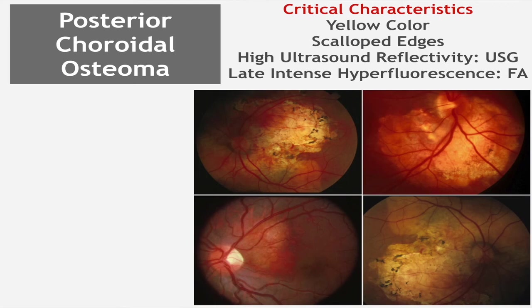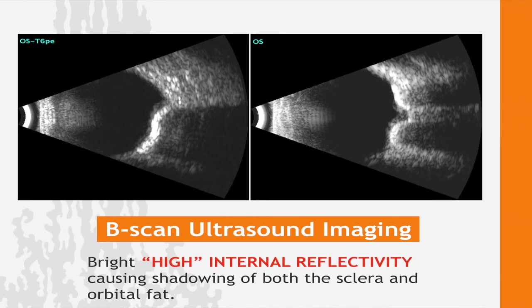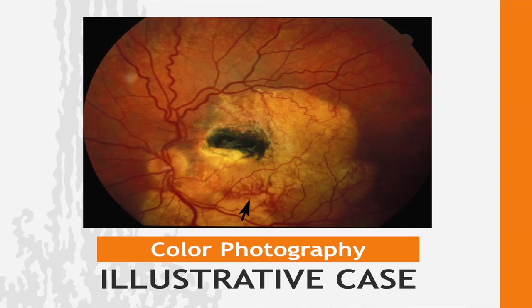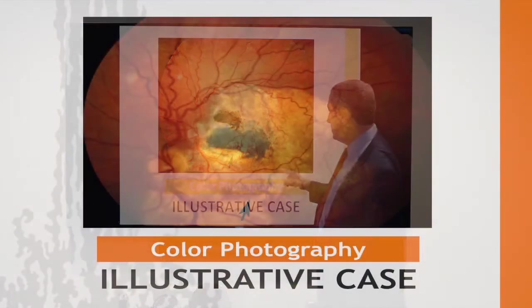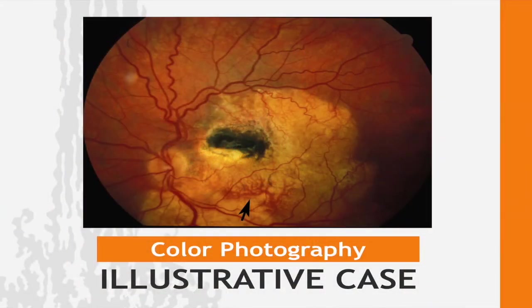On ultrasound, it's a very dramatic picture — the bone will block all the ultrasound coming across the eye and create a shadow into the orbit. The other tumor that does that is retinoblastoma, which isn't in this lecture. Here again are blood vessels with intrinsic vessel at the arrow, pigment, juxtapapillary location, scalloped edges, and high internal reflectivity on ultrasound.